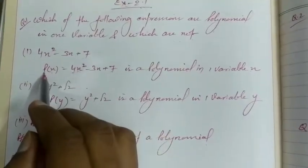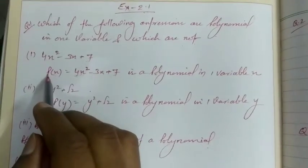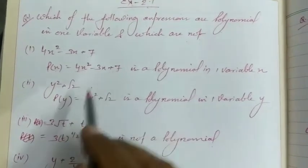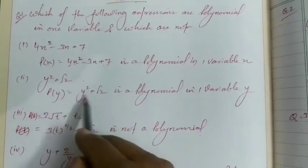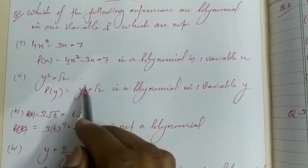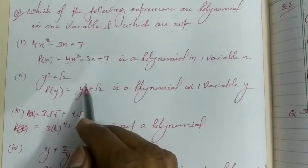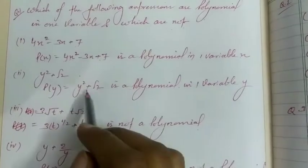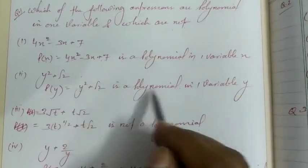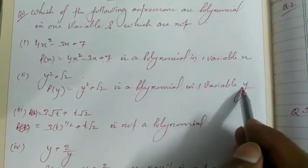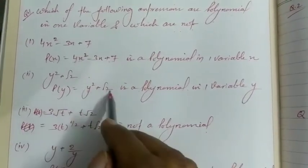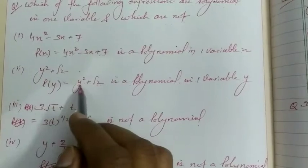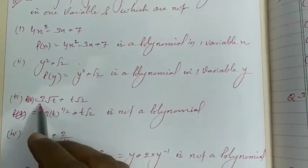This can be represented as p(x) — p for polynomial, x for the variable present. Next part: y² + √2. Here the power of y is 2, which is a positive integer, so this is also a polynomial in one variable. Since there is only a single variable y, this is a polynomial in one variable y, represented by p(y).